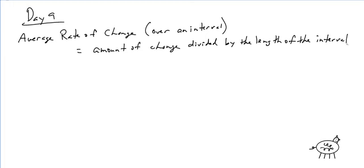So amount of change might be distance. That's probably the best example. Distance over time. And that's the interval. Your interval is the amount of time and your amount of change is the change in distance.